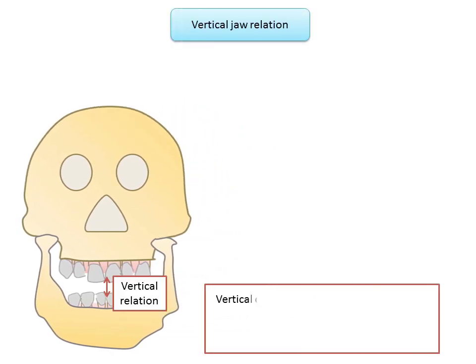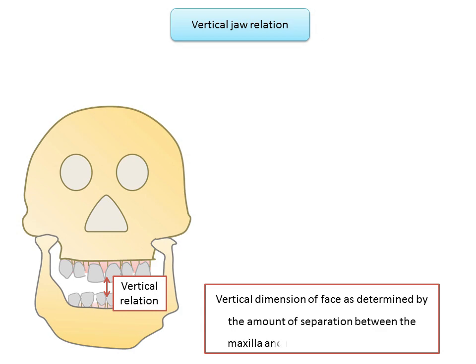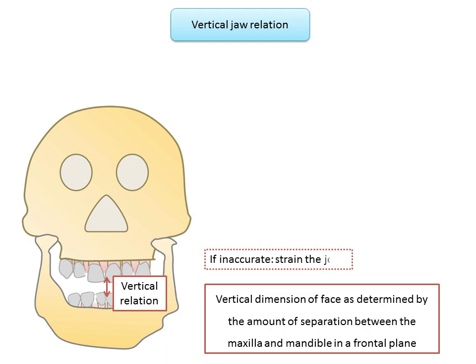Vertical jaw relation is the amount of separation between the maxilla and mandible in a frontal plane. This record provides the optimal separation between the maxilla and the mandible. If this record is not measured accurately, the joint will be strained — it will be overextended or underextended.